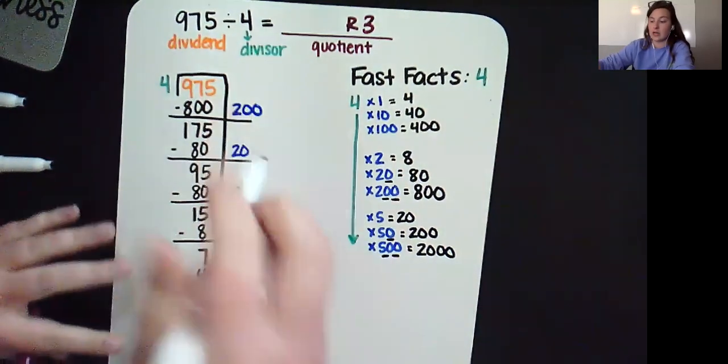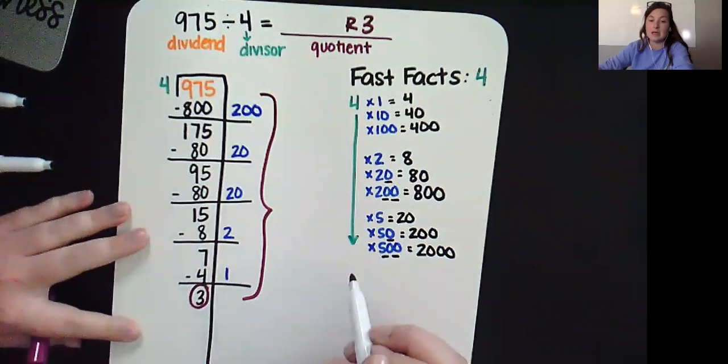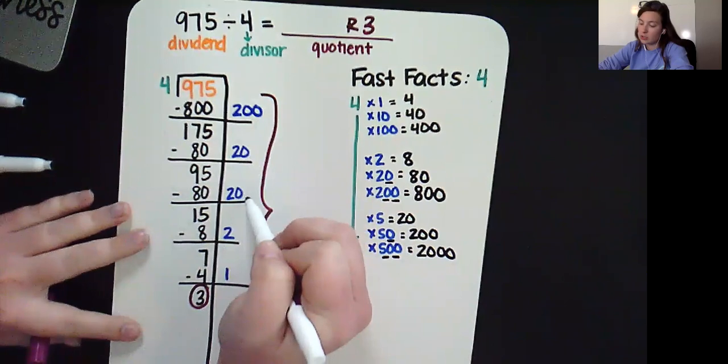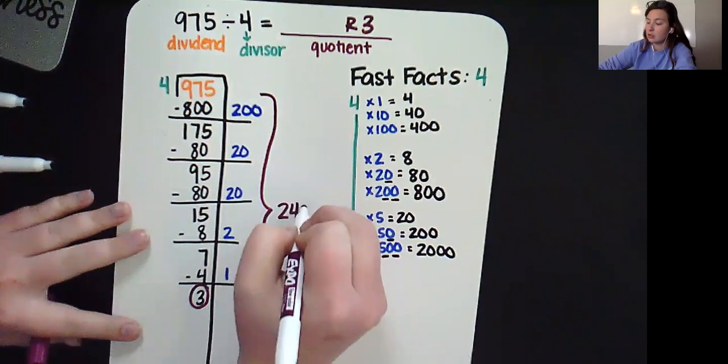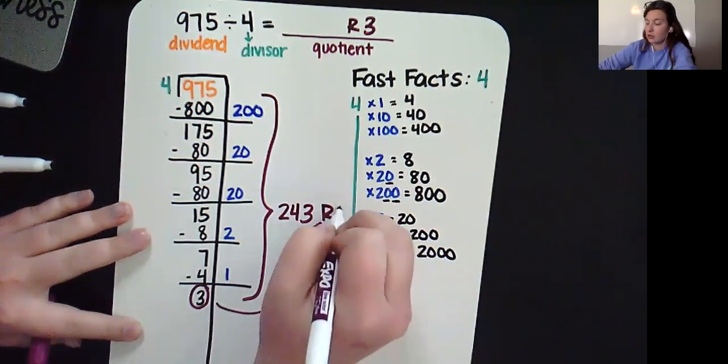Now, to figure out the rest of your answer, you're going to take the fast facts you used and add them together. So, 200, 220, 240, 242, 243. Don't forget that guy. Remainder 3.